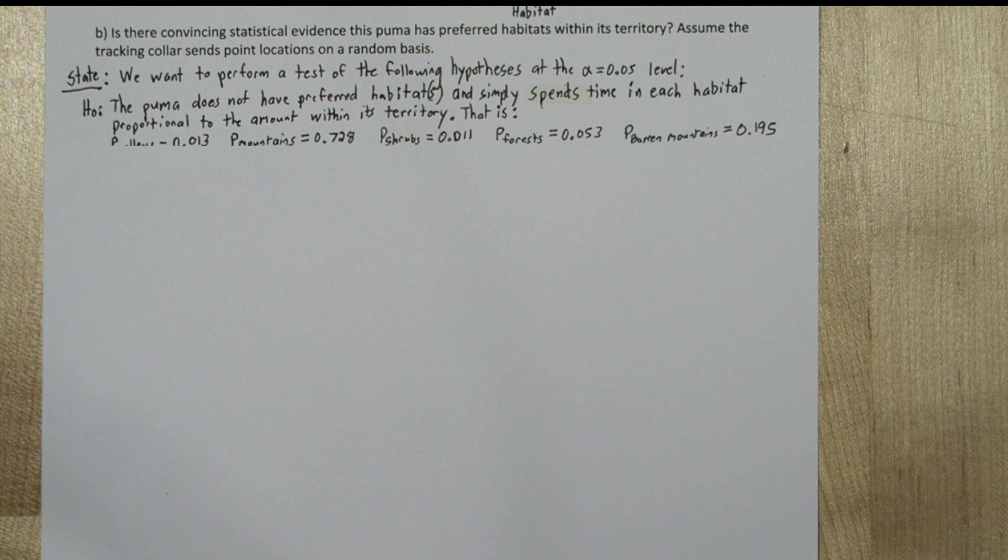So that is, P sub valley is 0.013, P sub mountain is 0.728, P sub shrubs is 0.011, P sub forest is 0.053, and P sub barren mountains is 0.195. So the proportions are what we see in its territory.